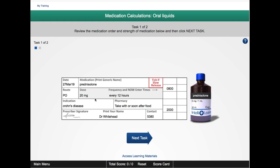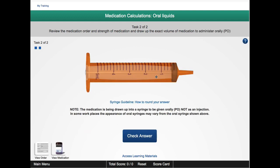You should be able to calculate that you're supposed to give 4 mils. When we click on next task you'll notice a 5 mil syringe.